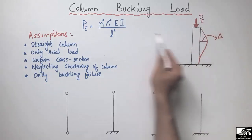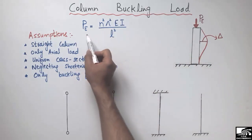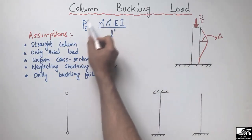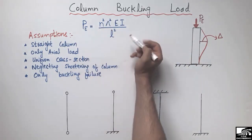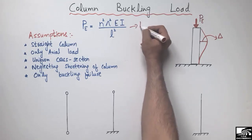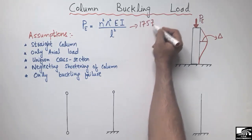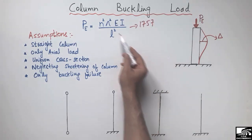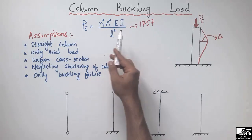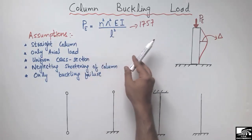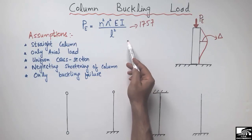This buckling load can be found using a formula developed by Euler in 1757, who was a Swiss mathematician. This formula can be used for various kinds of columns, but it depends on different conditions.